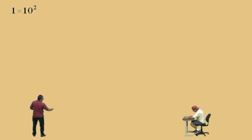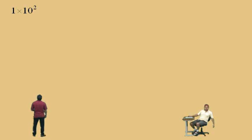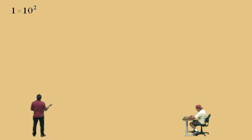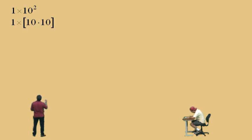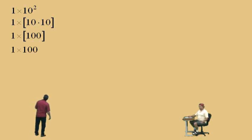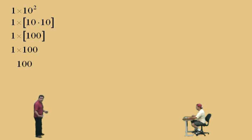One times ten squared — pay attention, Charlie! What does ten squared mean? Ten times ten. That's right, ten times ten is a hundred, and one times a hundred is one hundred. So one times ten squared does represent one hundred.